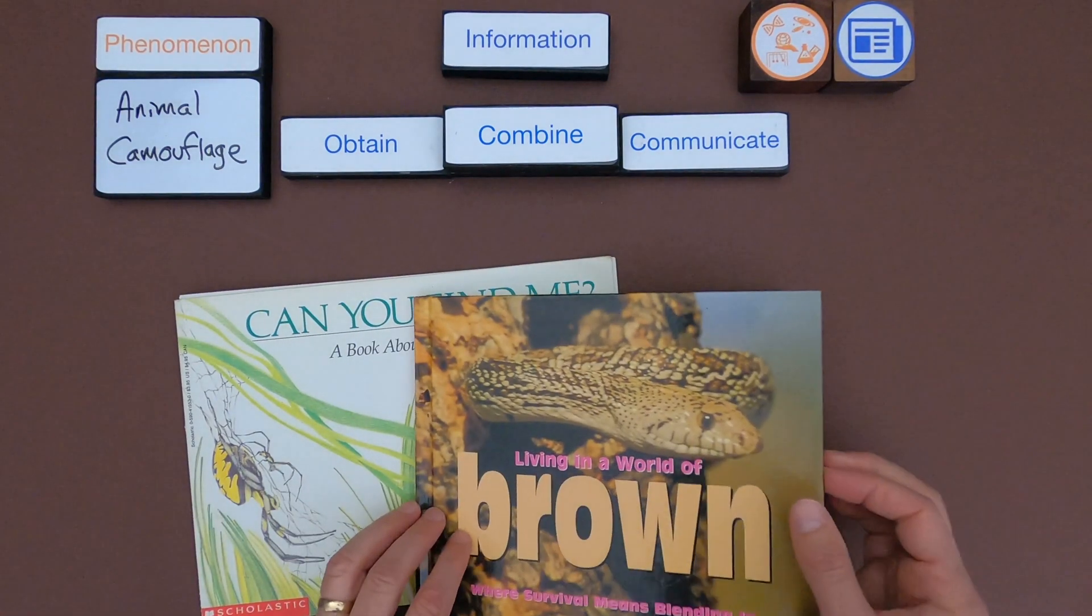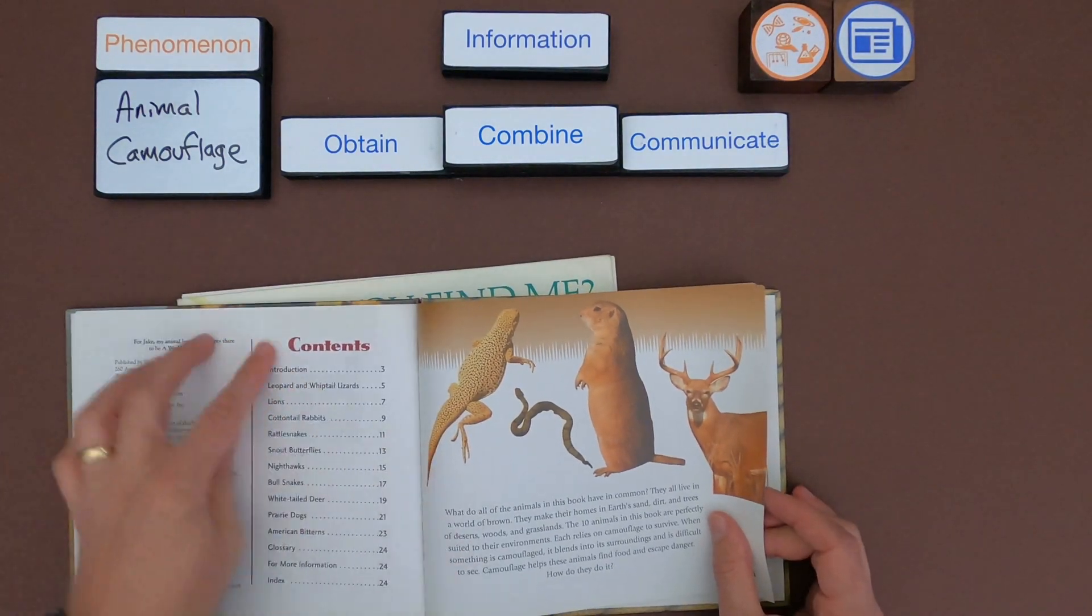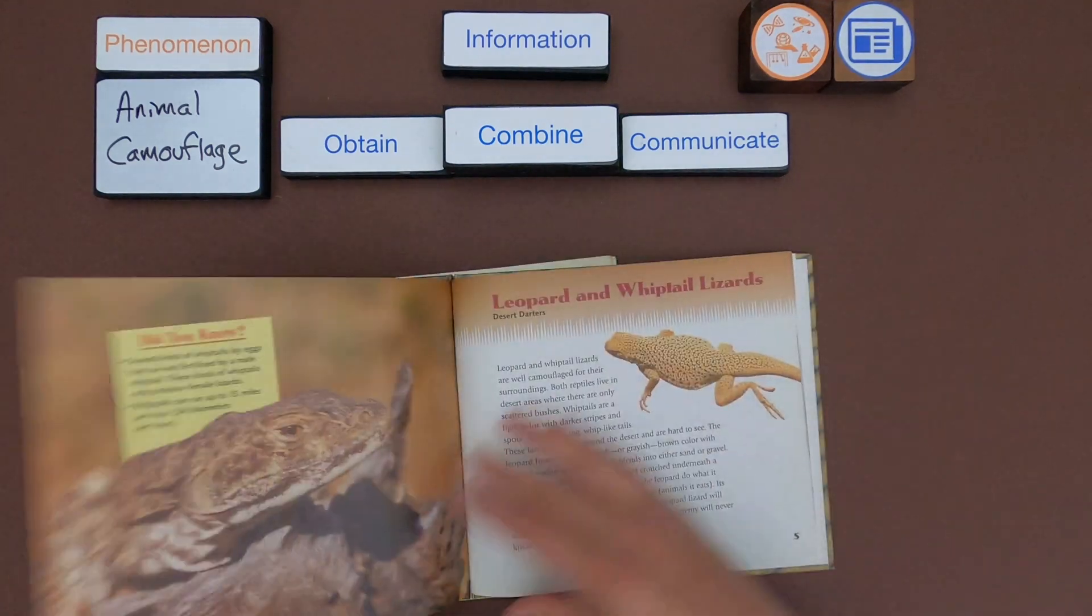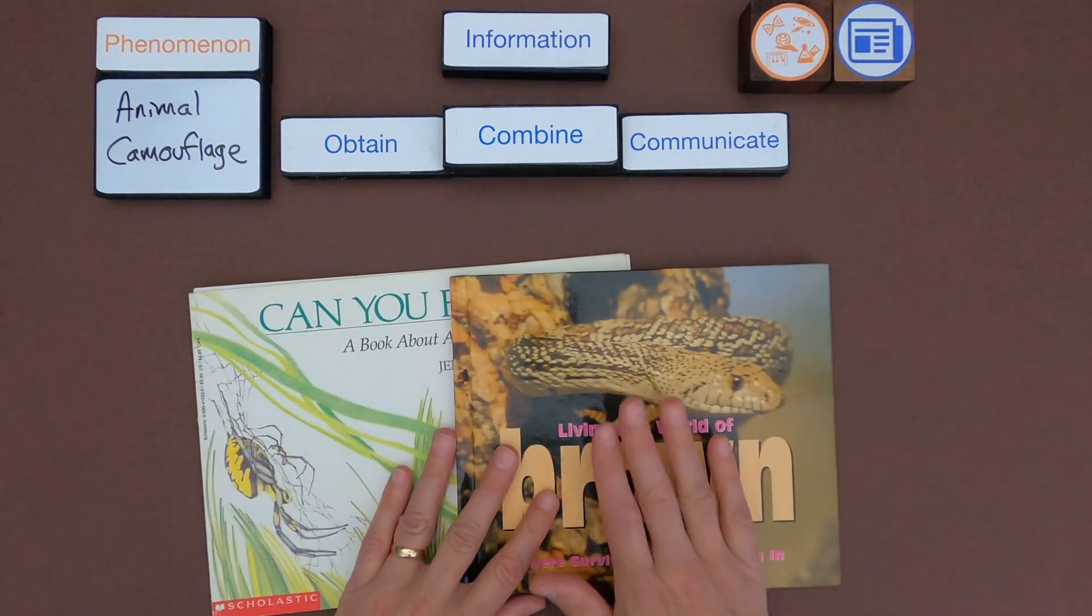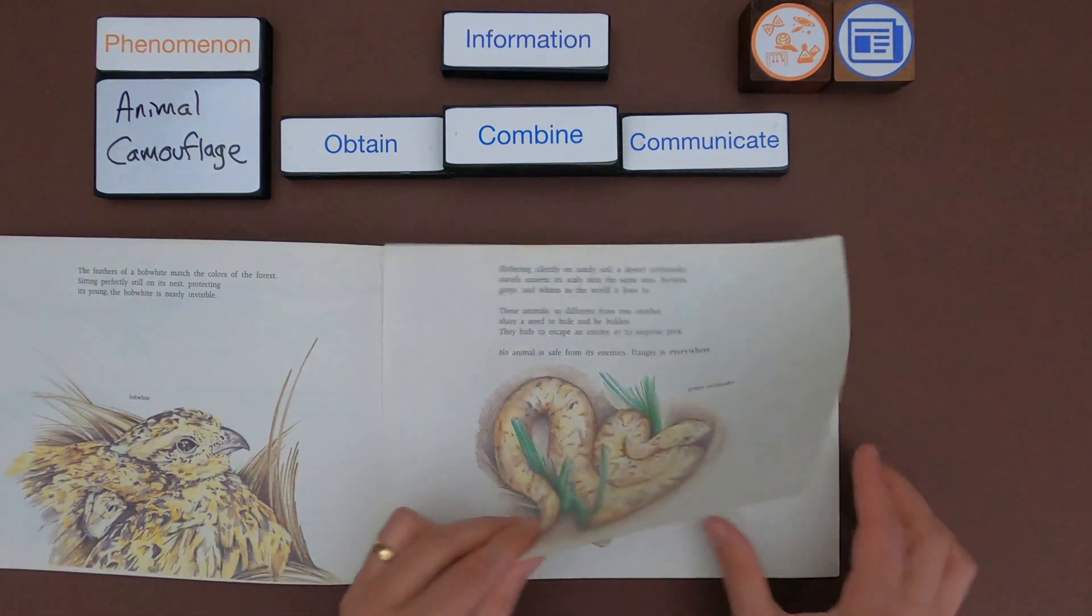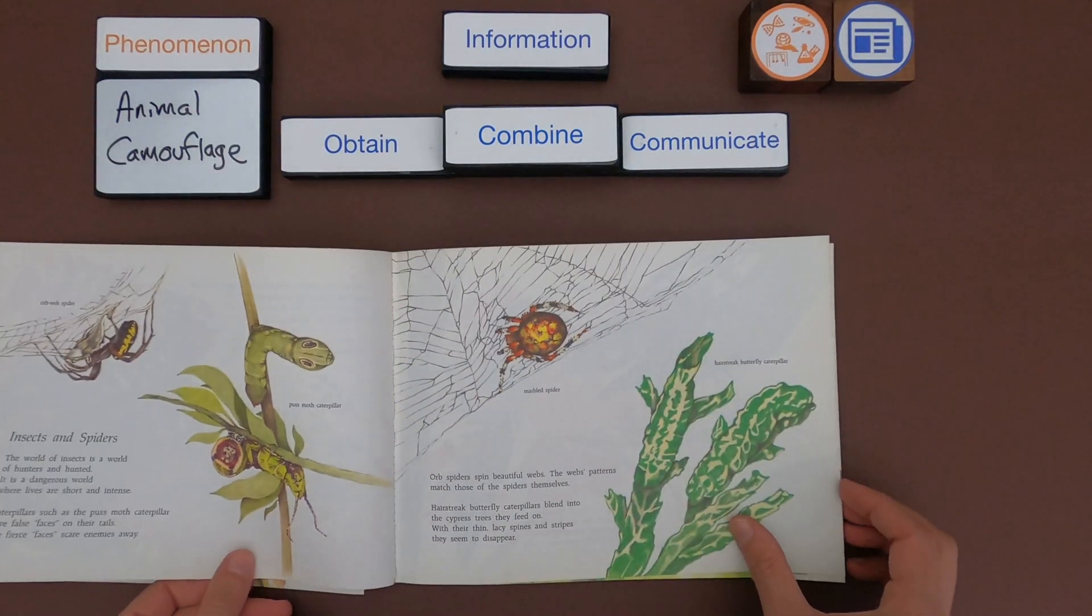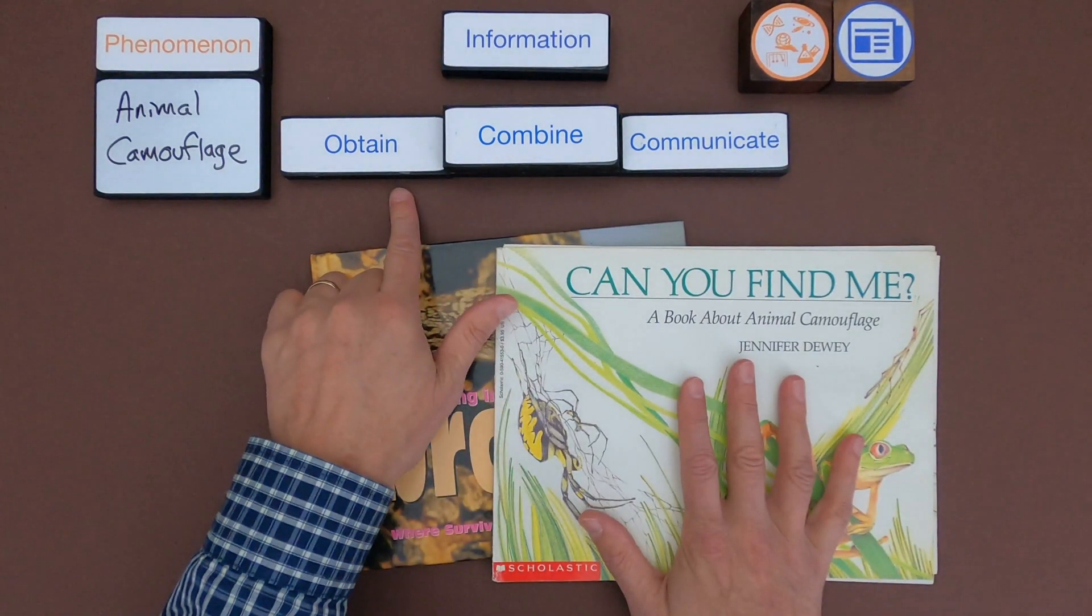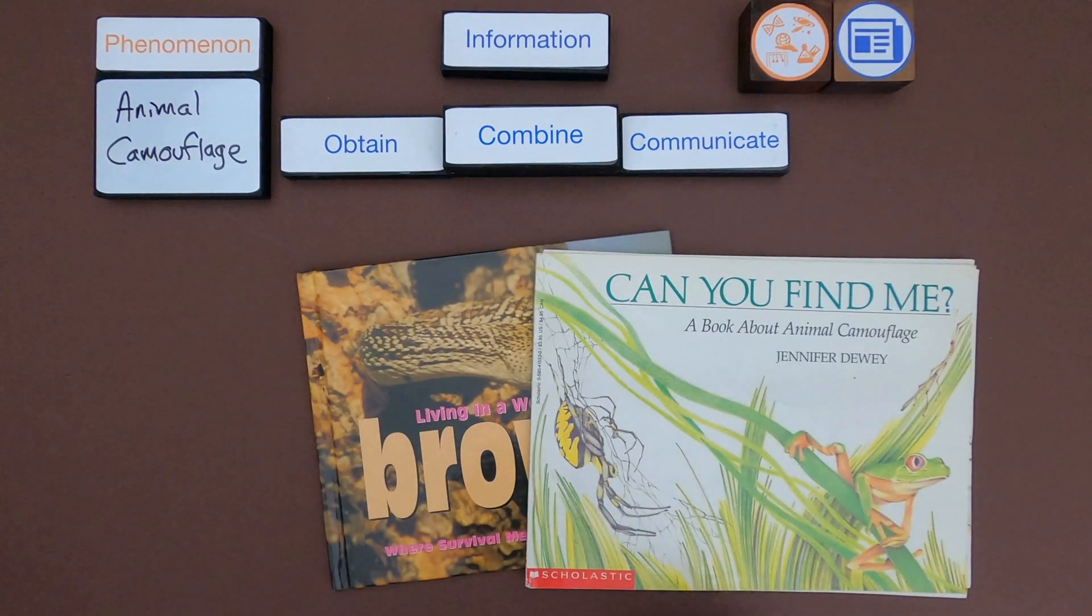And then as I start to look at the other information we've got Living in a Brown World. So it's got a table of context which is always a good indication that this is non-fiction informative text. It's got information on different lizards. So there's photographs. So this looks like this will meet. And then if we look at the next one, a book about animal camouflage. So I want to make sure that this is factual information, which it looks like it is. And so as I look at these I want to make sure before I dig in and obtain some information I should always write down the sources that I'm going to use as I do that. And that will be important later.